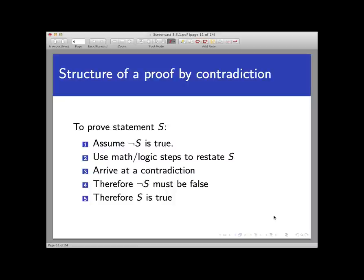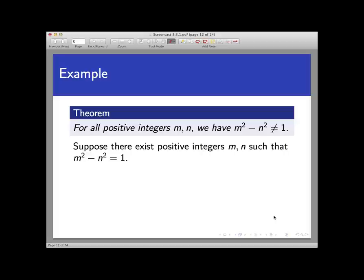We'll see several examples of this proof technique throughout this screencast. Let's start with a simple example. We're going to prove, by contradiction, the following statement: for all positive integers m and n, m² minus n² is not equal to 1. Note that the word 'positive' is necessary in the condition — if we allow any integers at all, the equation certainly does have solutions. For example, m equals 1 and n equals 0 will work, and 0 is not positive. The first step is to assume that the negation of the statement we want to prove is true. The statement is universally quantified, so its negation is existentially quantified: there exist positive integers m and n such that m² minus n² equals 1. So let's assume that this is true.